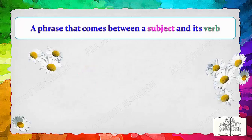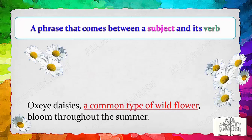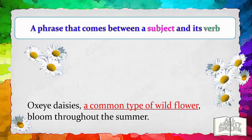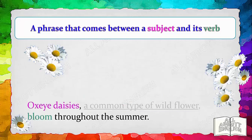Here's another example: 'Oxeye daisies, a common type of wildflower, bloom throughout the summer.' 'A common type of wildflower' is a phrase. There is no subject within the phrase, but there is a noun — in fact, the whole phrase is a noun phrase. The phrase describes the subject in another way. By mentally removing the phrase, we can see that the plural subject 'Oxeye daisies' takes on a plural verb, 'bloom.'